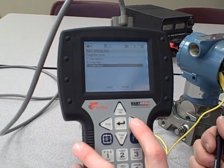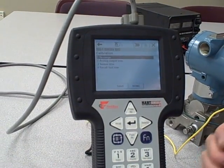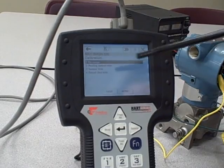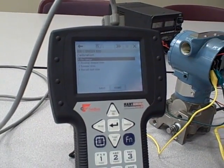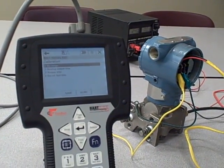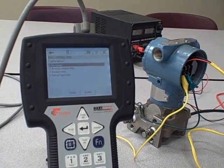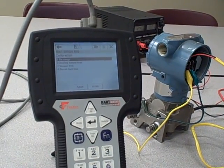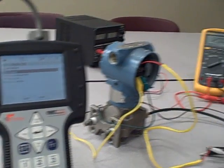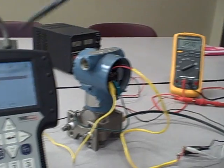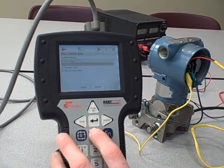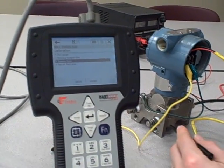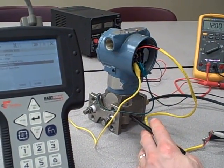Under calibration, this is a very important menu for instrument technicians. We can set the range points, which we could set from other screens too. We can do what's called an analog output trim, which tells or confirms to the transmitter what 4 and 20 milliamps looks like. For example, our last test, where we forced the output to go to 20 milliamps and our Fluke meter actually read 20.01, may indicate the need to do an analog output trim. We can also do a sensor trim, where we tell or confirm to the transmitter what certain amounts of pressure actually look like when applied to the cell.